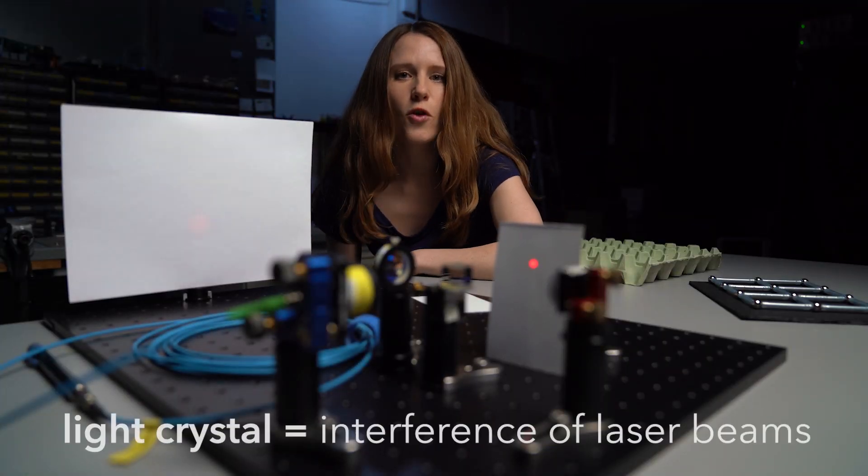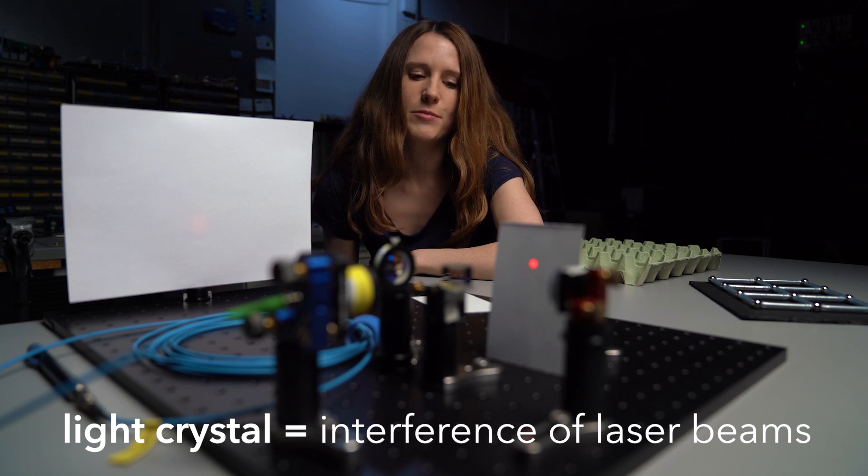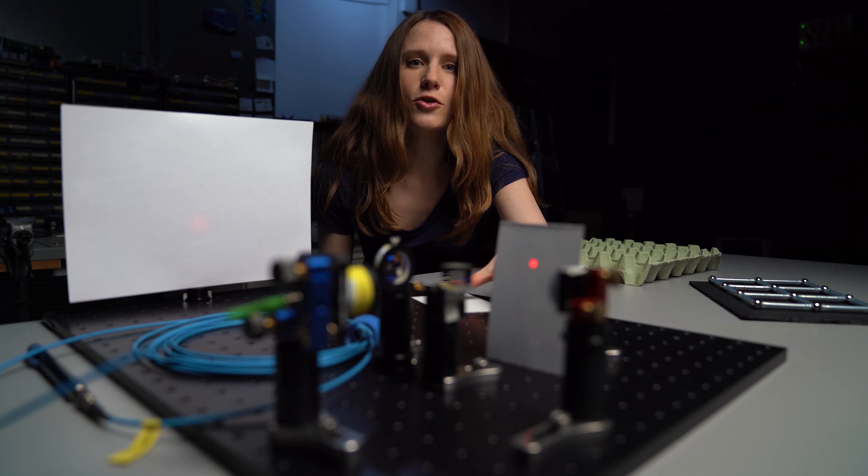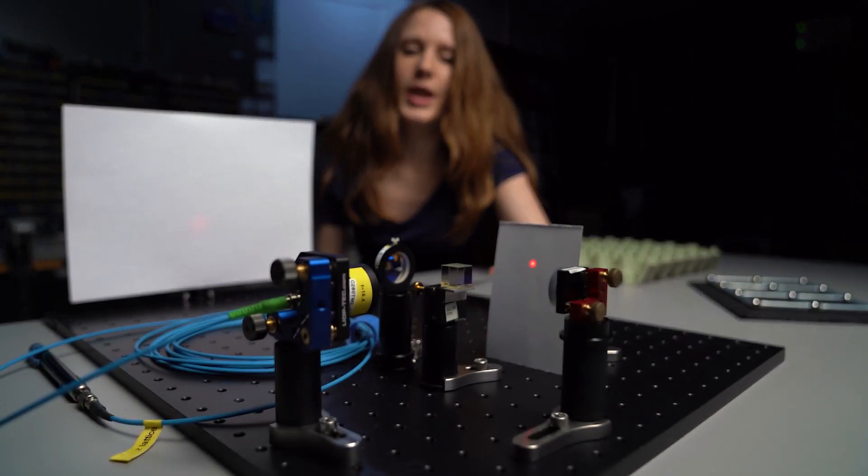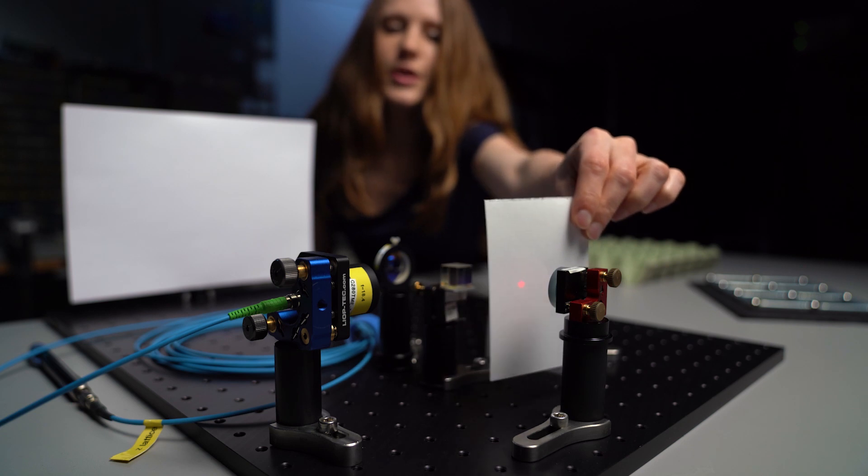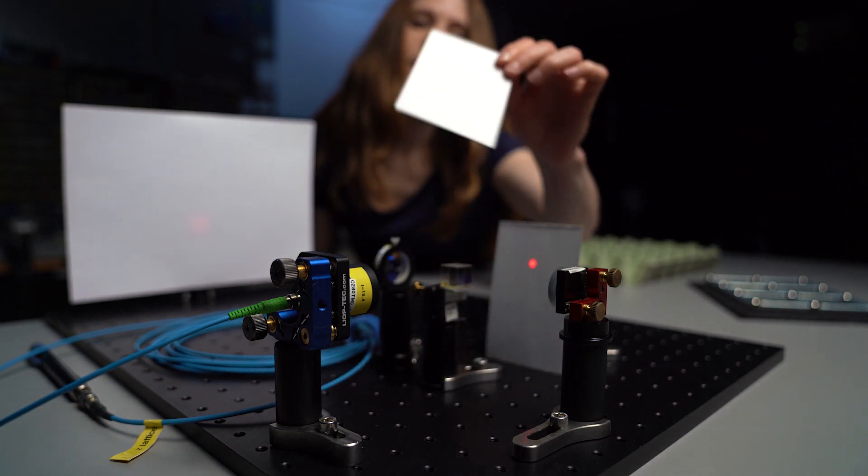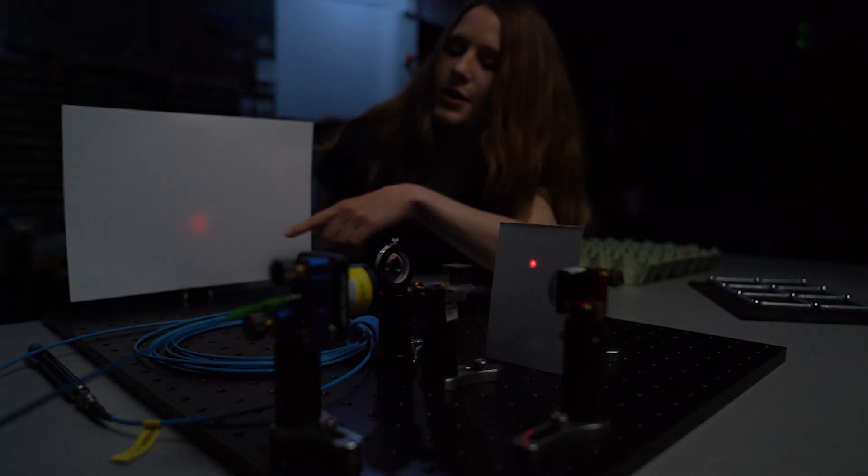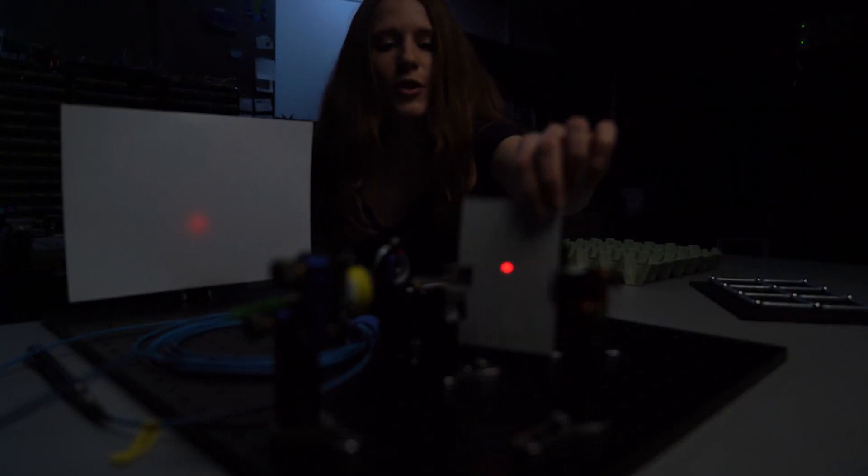Our light crystal is formed by the interference of laser beams. In this simplified setup here I'm interfering two laser beams. So we have the first beam which travels along this direction here. So now if we turn down the light we can see the beam as a big spot here on the screen. And then we have a second beam traveling along here.